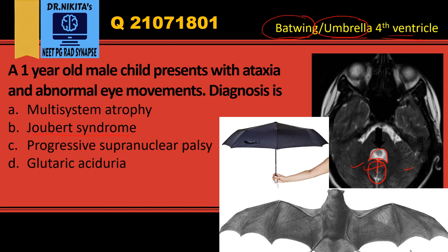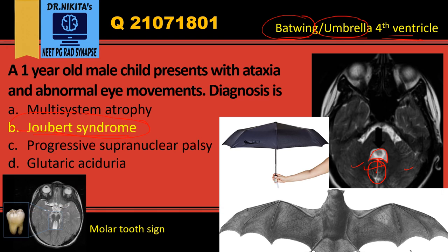Another feature of Joubert syndrome involves the brainstem — it gives the molar tooth sign. The molar tooth appearance is caused by the superior cerebellar peduncles, which are elongated and thickened. So the key imaging features of Joubert syndrome are the molar tooth sign and the batwing or umbrella-shaped fourth ventricle.